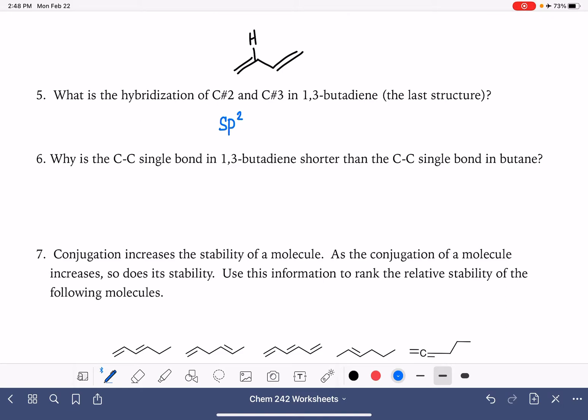And then it's asking why is the single bond in butadiene shorter than the single bond in butane? Because the single bond in butadiene uses sp2 hybrid orbitals, which are shorter. The single bond in butane uses sp3 orbitals, which are longer.